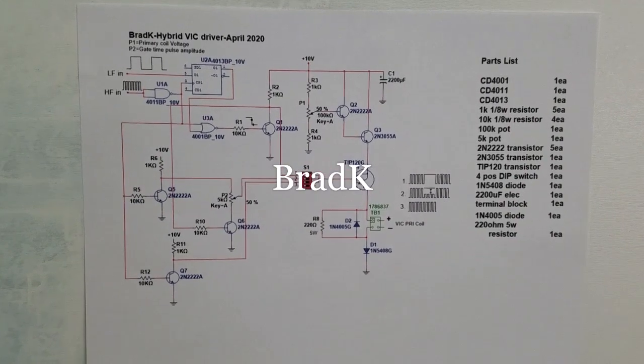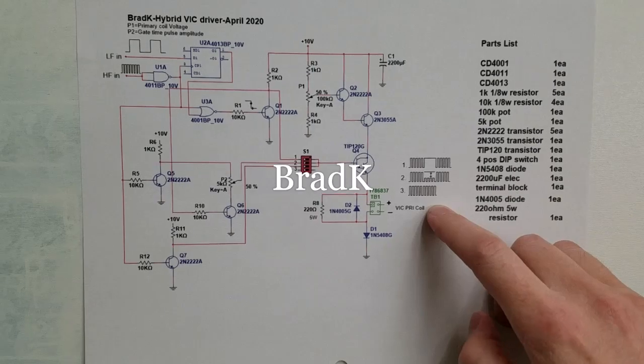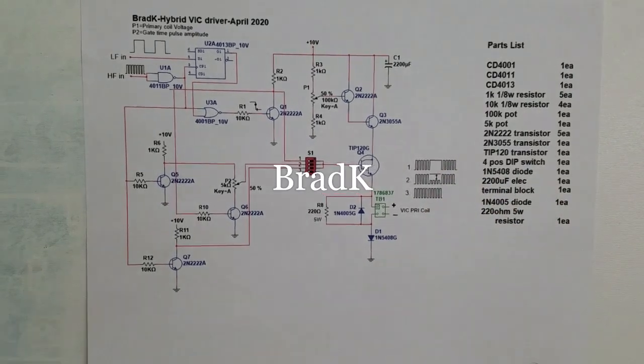And back to the schematic here. I've got four different possibilities across the primary coil, even though I've only labeled here. Let's look at those.